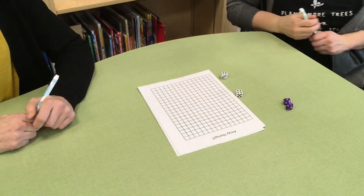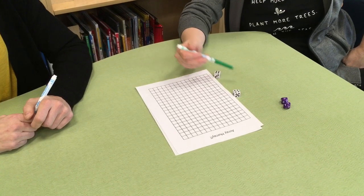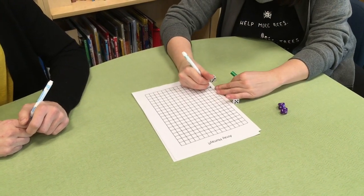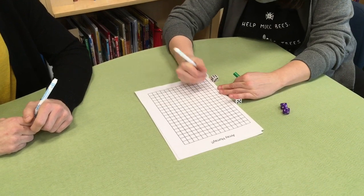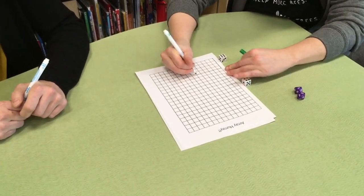I'm going to roll the dice. Oh, I'm going to be making a four by six array. So I'm going to be coming down four boxes. I'm going to be going over one, two, three, four, five, six.